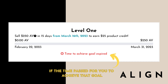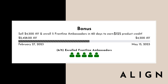If you were unable to achieve one of your level Quick Start goals, it will show you that the time to achieve that goal has expired. But remember, if you're still within your 60-day time frame, even if you missed your Level 1 goal you can achieve your Level 2 goal, and if you missed your Level 2 goal you can still achieve your Level 3 goal, as long as it's within that first 60-day time frame.